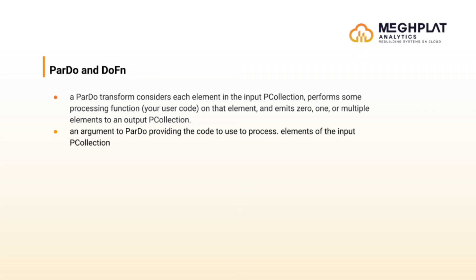Moving further, we'll understand what ParDo and DoFn functions are and how to implement them in our pipeline. A ParDo transform considers each element in the input PCollection — the data or dataset — then performs some processing function on that element. For example, that can be splitting it up, calculating the length, or extracting the vowel from a string. It then emits zero, one, or multiple elements to an output PCollection.